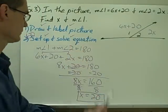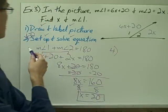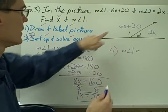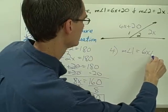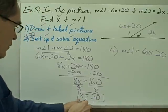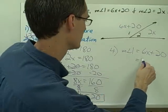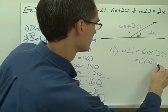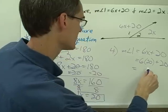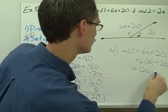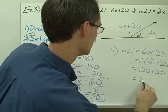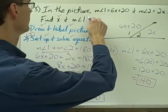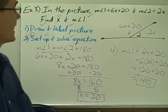I've solved the equation. Step 4 — am I done? I found x, but I also need the measure of angle 1. The measure of angle 1 equals 6x plus 20, and substituting 20 in for x gives 6 times 20 plus 20, which is 120 plus 20. The measure of angle 1 is 140 degrees. Now I'm done.